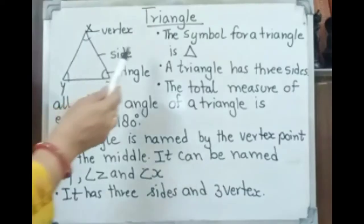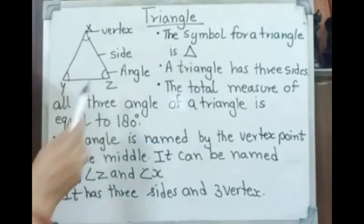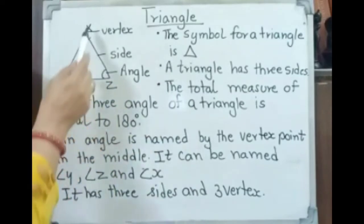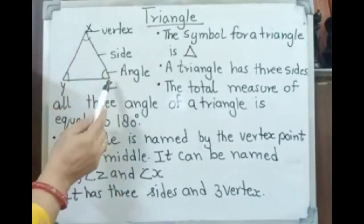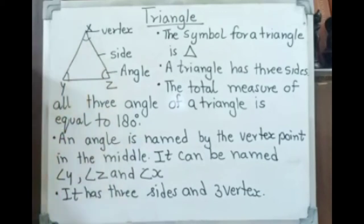The symbol for a triangle is this. A triangle has three sides: XZ, ZY, and YX.